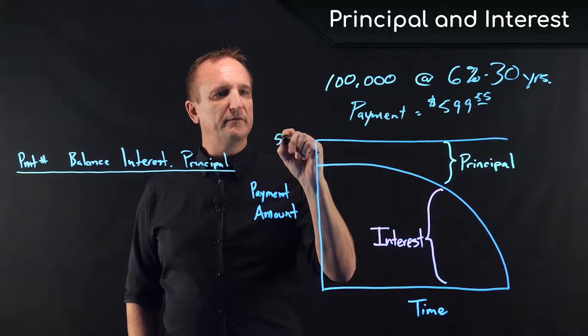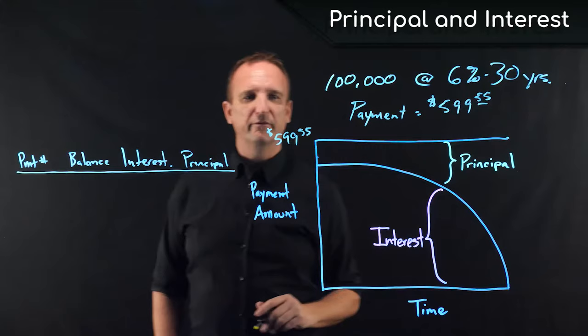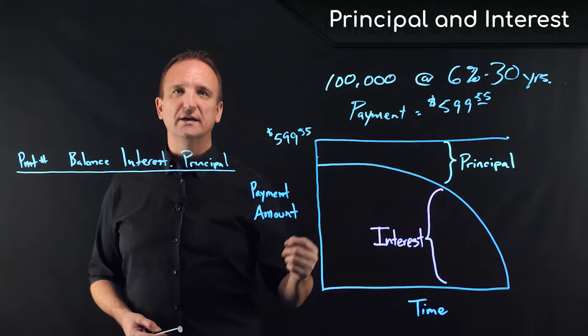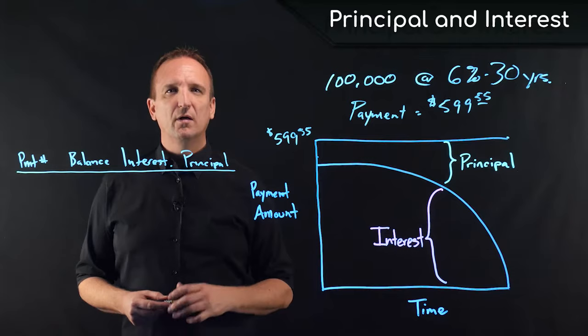$599 is our payment amount all the way through the life of the loan. Contained within that $599 is both the interest that accrued that month and also the amount of principal it's going to take to pay down the loan at the steady rate that we've determined. Let's take a look at how that payment is broken down with each payment.